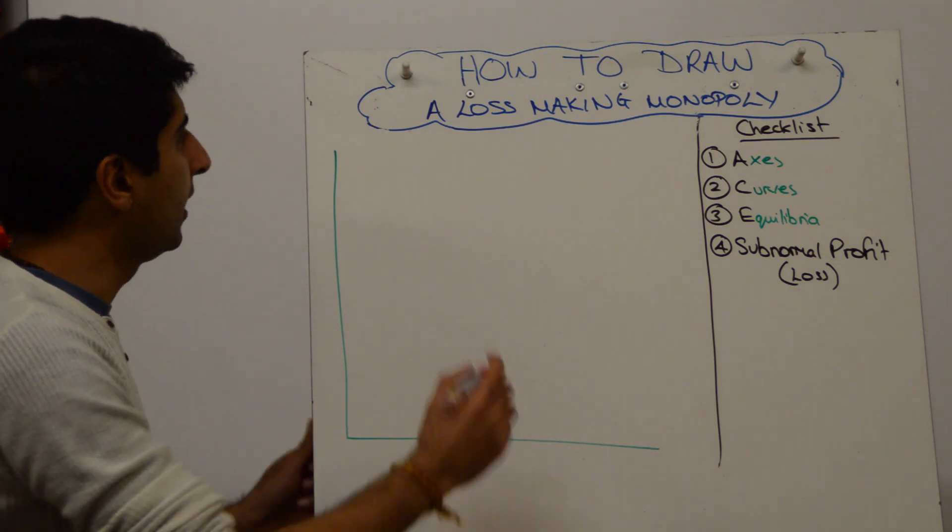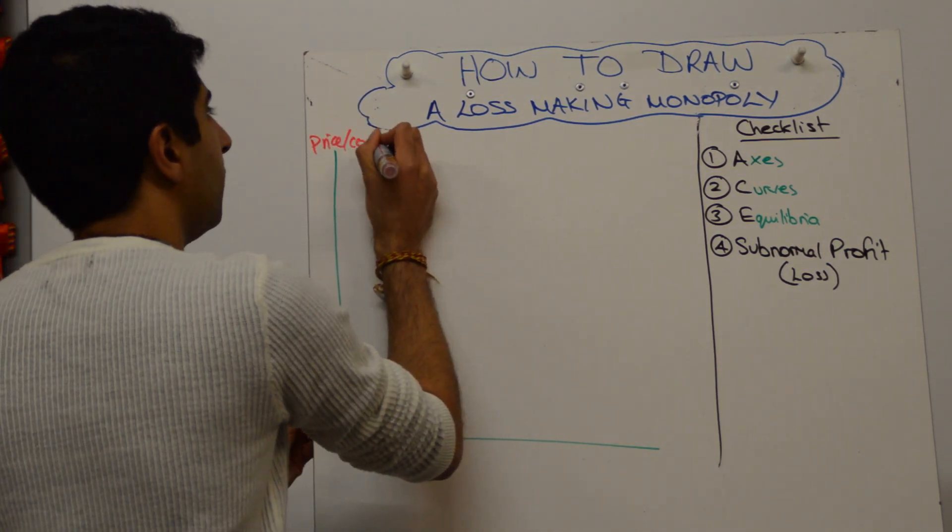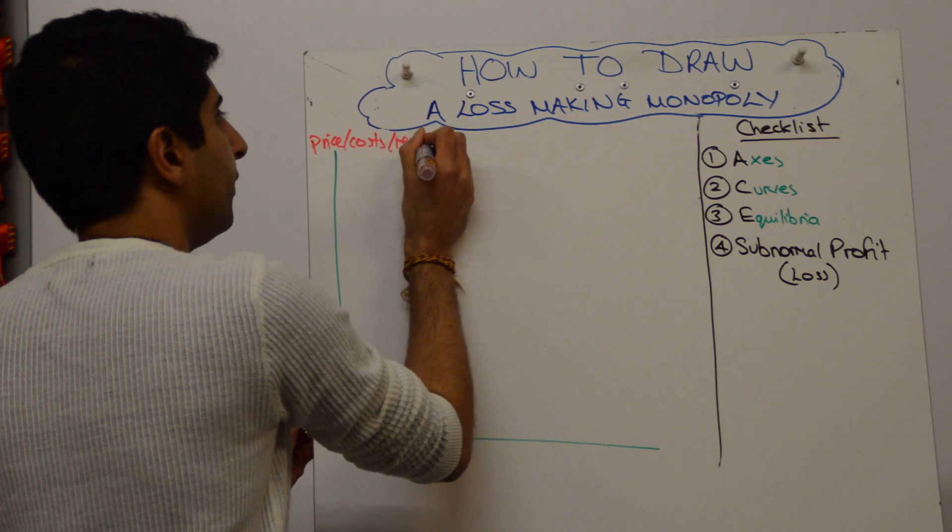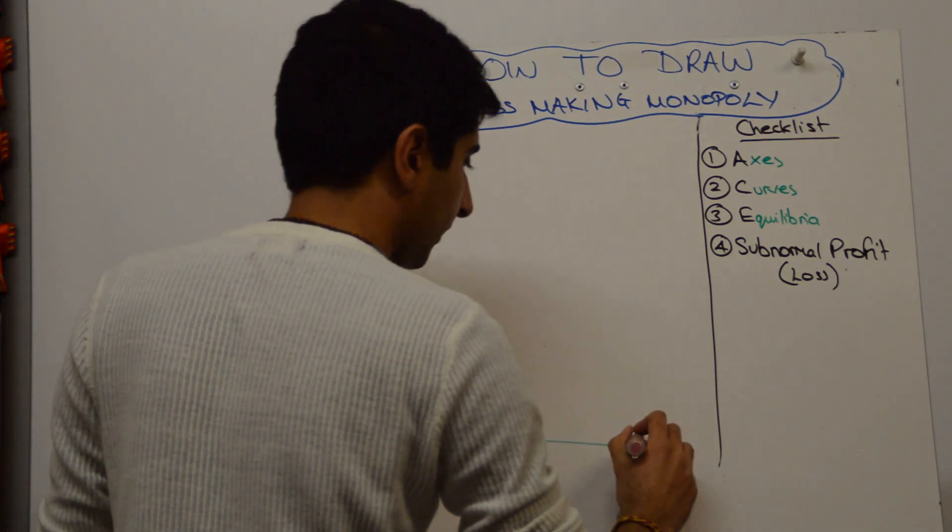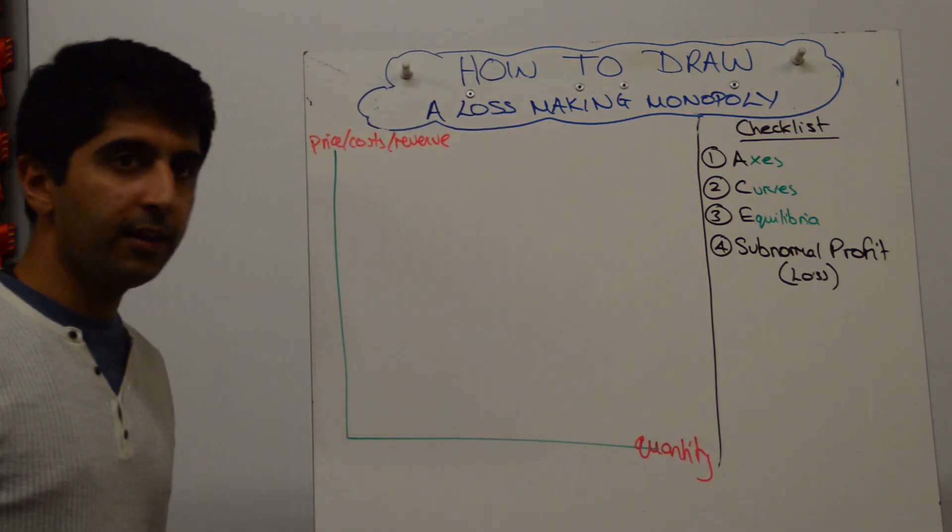Right, let's get started by labeling the axes. We're going to have price, costs, and revenue on the y-axis, and simply quantity on the x-axis like this.